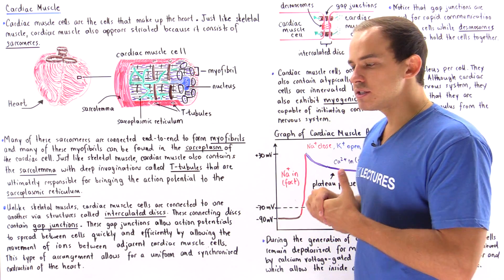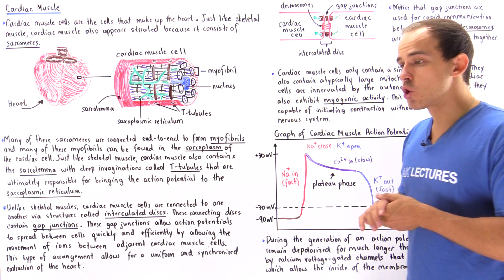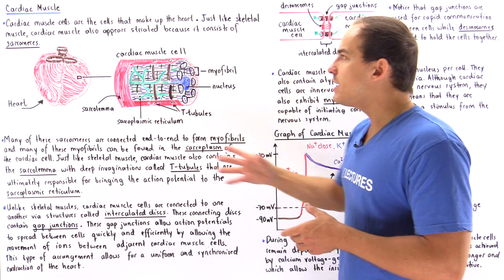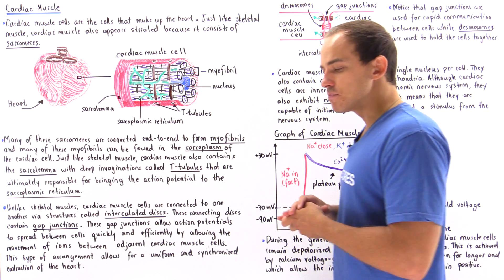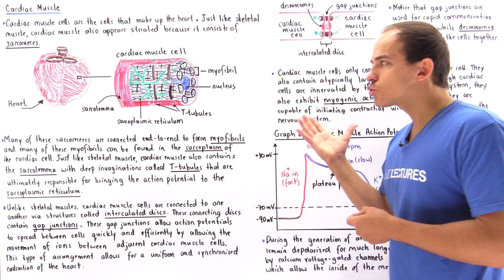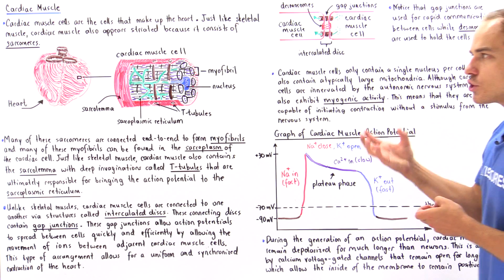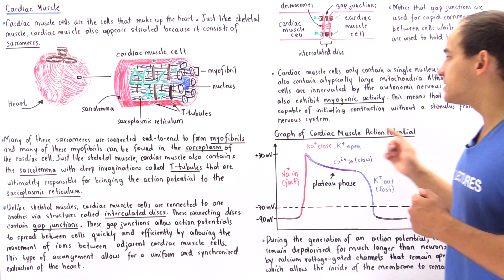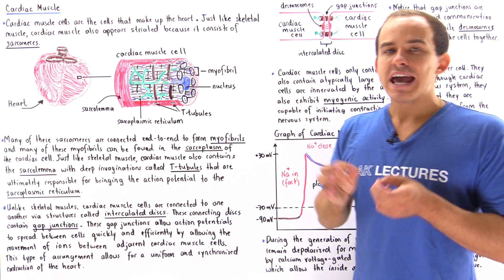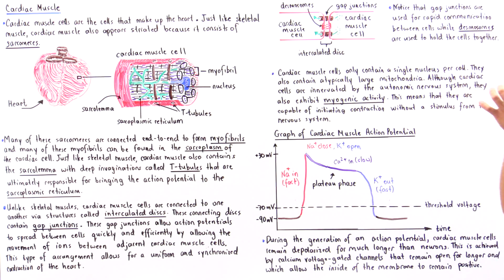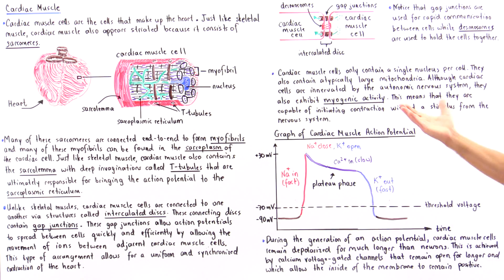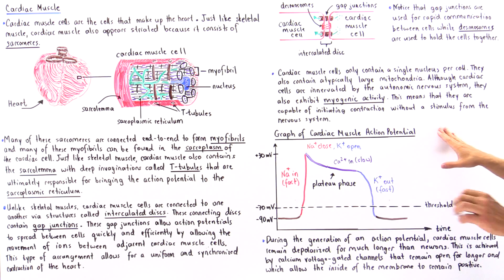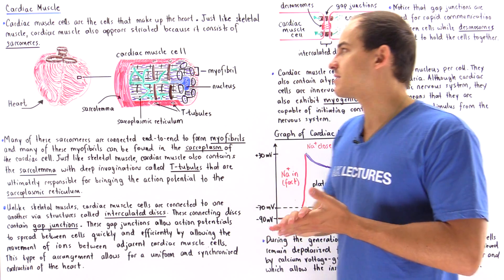Unlike skeletal muscle tissue, which is voluntary because it is controlled by the somatic nervous system, cardiac muscle is involuntary because it is controlled by the autonomic nervous system. Although it is controlled by the autonomic nervous system, certain cardiac muscle cells exhibit myogenic activity, meaning they can initiate a contraction without a stimulus from the nervous system. This will be discussed further when covering the cardiovascular system.